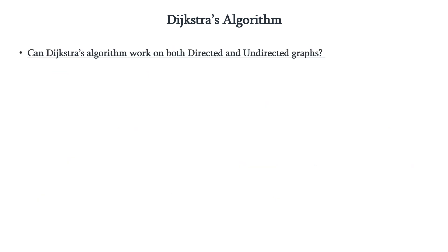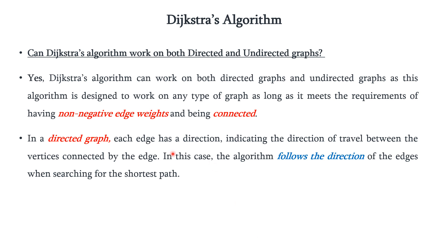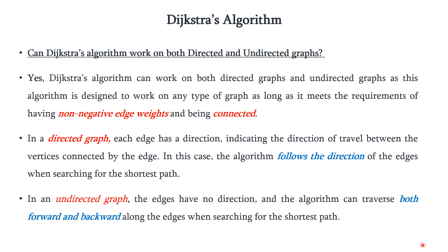The algorithm works for both directed and undirected graphs. The constraints are that the edges should be positive and the graph should be connected. For a directed graph, the edge has a direction, so the algorithm follows the direction of the edges when searching for the shortest path. For an undirected graph, the edges have no direction, so the algorithm can traverse both forward and backward along the edges when searching for the shortest path.